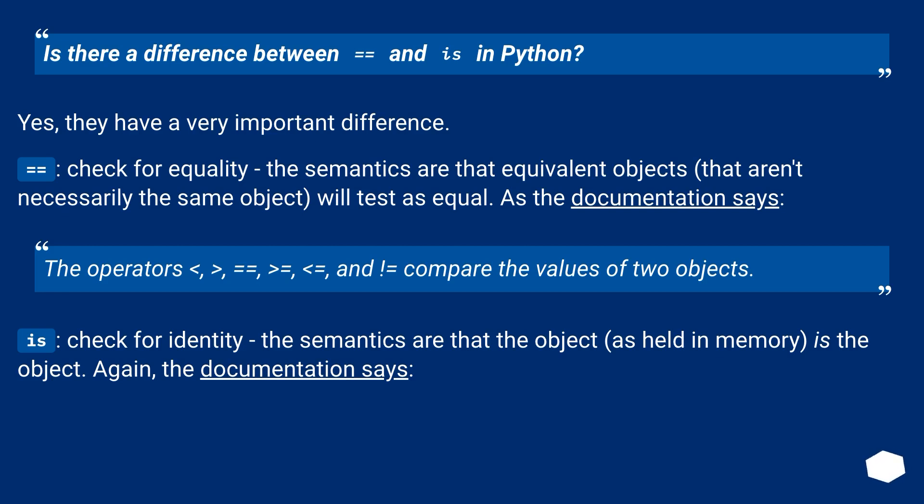Is there a difference between equals equals and is in Python? Yes, they have a very important difference. Equals equals checks for equality, the semantics that equivalent objects that aren't necessarily the same object will test as equal. As the documentation says, the operators less than, greater than, equals equals, greater than equals, less than equals, and not equal compare the values of two objects.